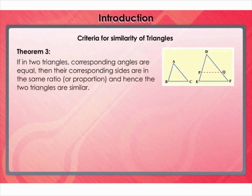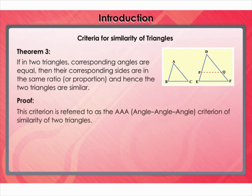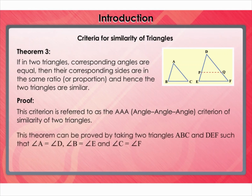Let's understand the criterion for similarity of two triangles in the form of a theorem. If in two triangles, corresponding angles are equal, then the corresponding sides are in the same ratio or proportion, and hence the two triangles are similar. This criterion is referred to as the AAA (angle-angle-angle) criterion of similarity of two triangles. This theorem can be proved by taking two triangles ABC and DEF such that angle A equals angle D, angle B equals angle E, and angle C equals angle F.